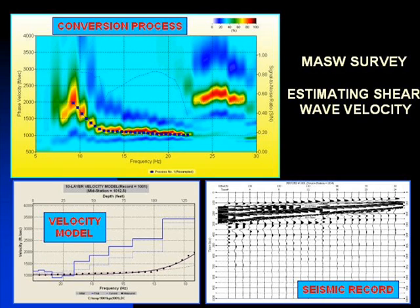Using a program called SurfSeis, the raw seismic surface wave data is converted into shear wave velocities. The weighted average of the shear wave velocities within the depth interval of 0 to 100 feet is used to determine the IBC site classification.